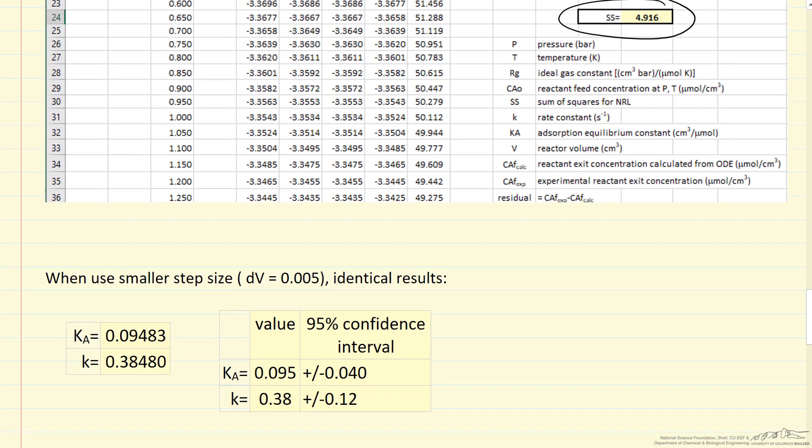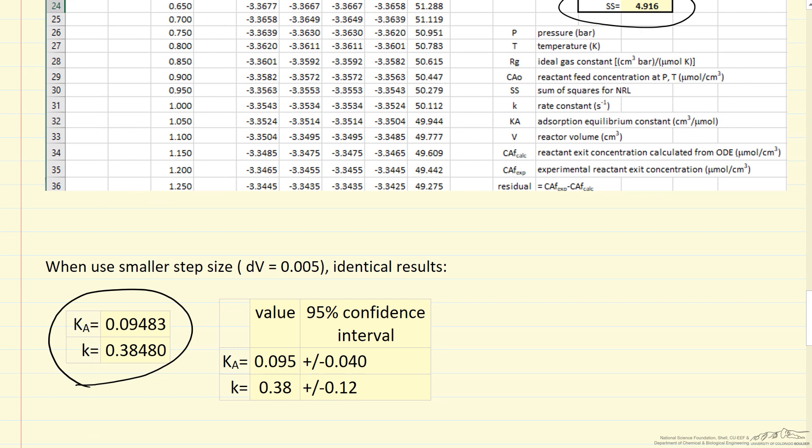If we carry this out, here are the two parameters we determine. If we use a smaller step size—what I showed you was for step size 0.05—if we use a smaller step size, 10 times as many calculations now, we get the same values. So there's no advantage to that smaller step size, and in particular when you realize that it's only really these first two digits that matter when you look at what the confidence intervals are.